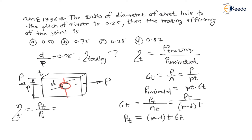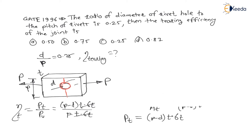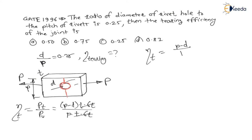Tearing efficiency is (p minus d) into t into sigma t, divided by p into t into sigma t. The t and sigma t terms cancel out. Therefore, the tearing efficiency becomes (p minus d) divided by p.